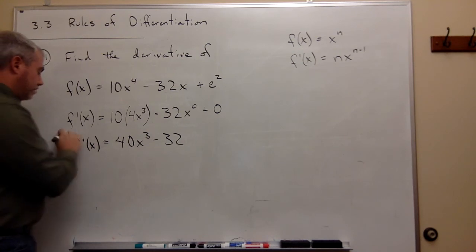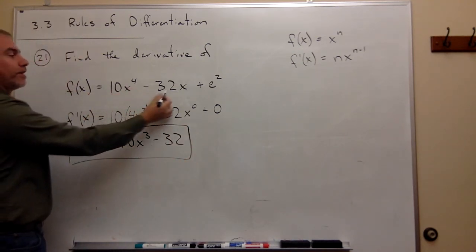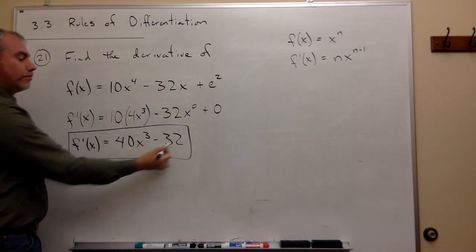So we're done. So the derivative of 10x to the fourth minus 32x plus e squared is 40x cubed minus 32.